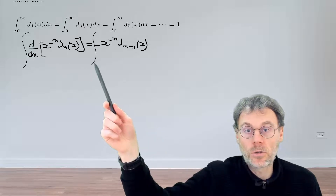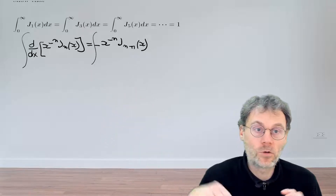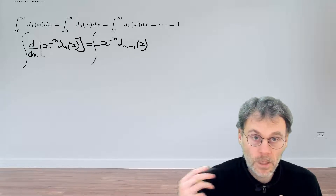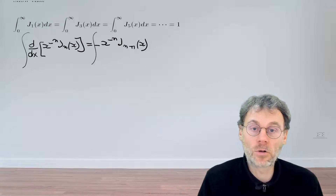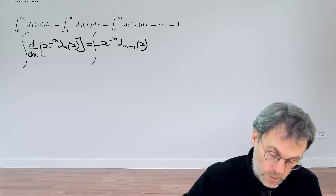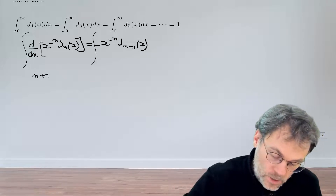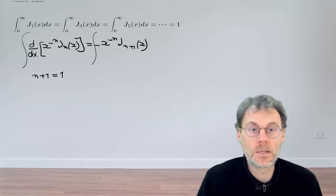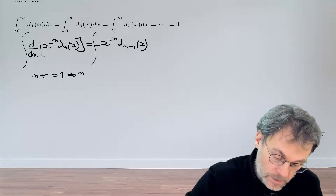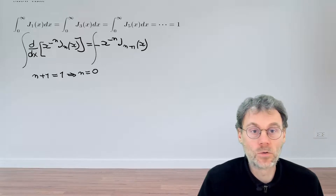Now this is an integral on the right-hand side of J of order n+1. In our case, we're looking at an integral of J₁, so in order for this to be useful we need n+1 to equal 1, which means that n is equal to 0.